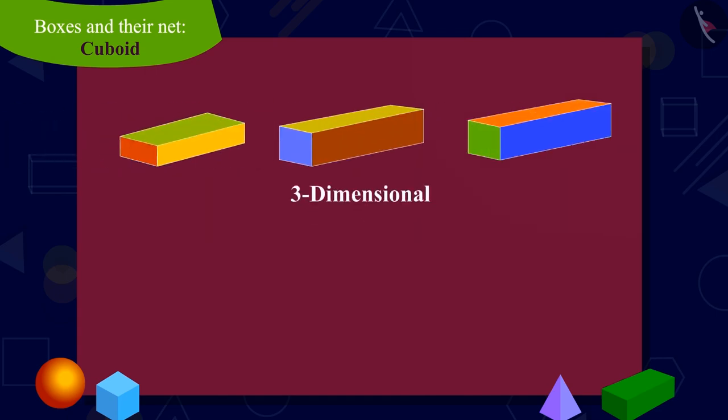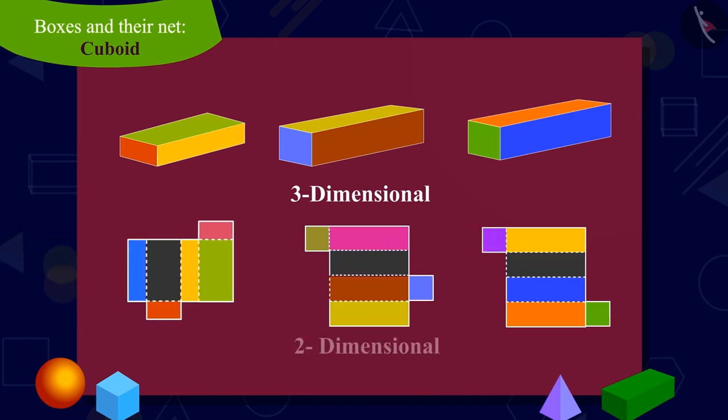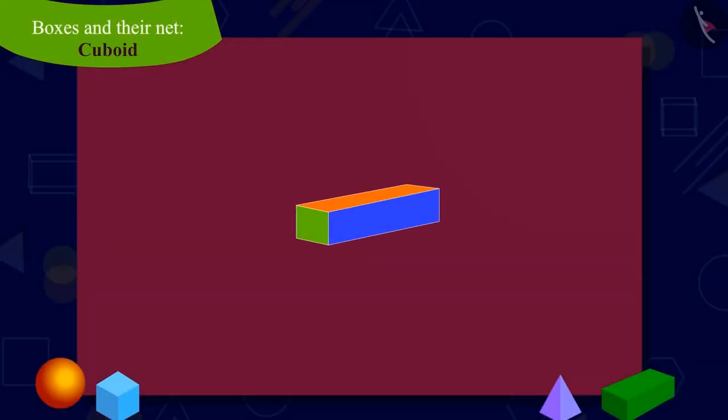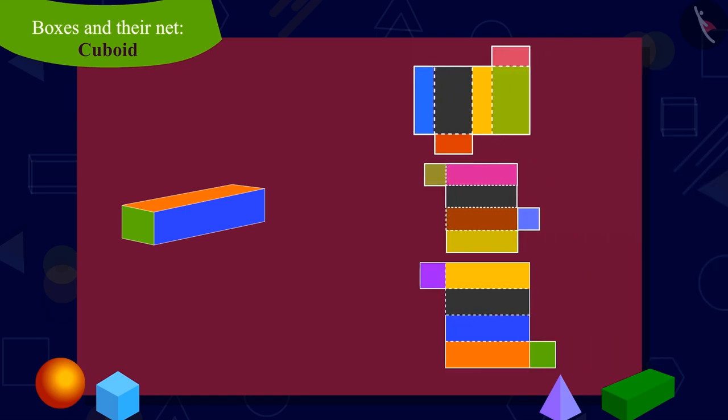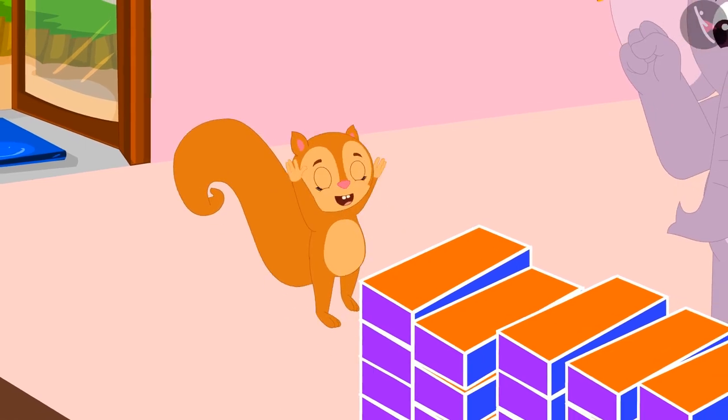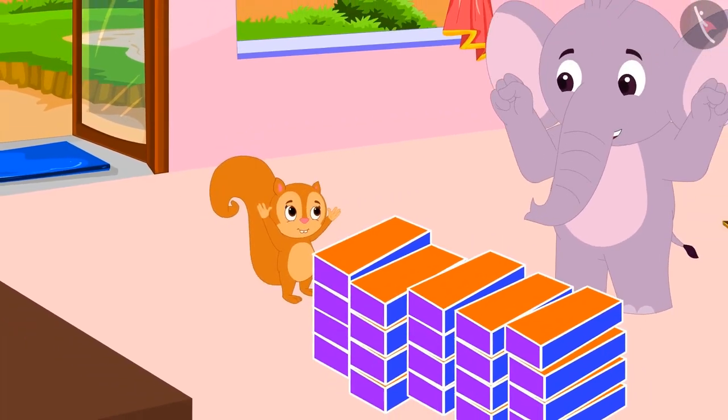Yes children, many two-dimensional nets of any three-dimensional shape such as cuboids can be made. We can make any box by folding various types of nets. Chanda was happy to learn about the cuboid shaped net.